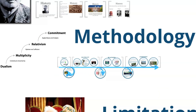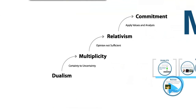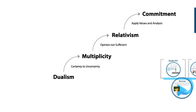The methodology of Perry can be simplified down into four positions: dualism, multiplicity, relativism, and commitment. We're going to describe the nine positions that are within these four in more detail.